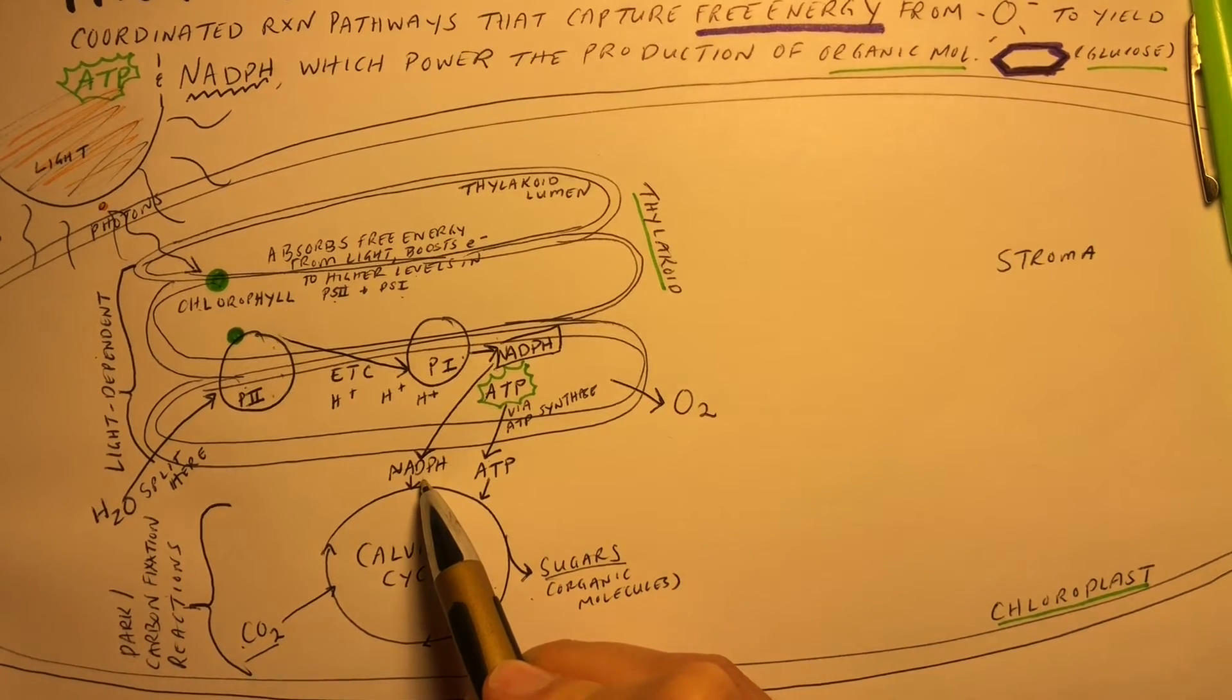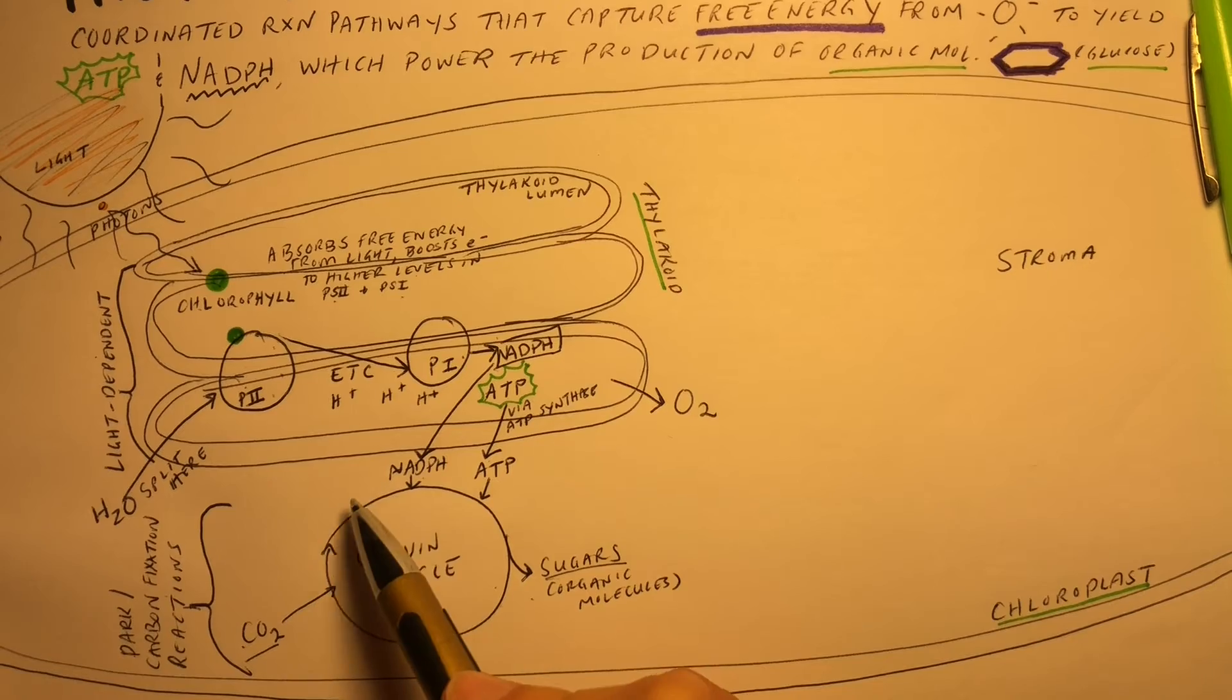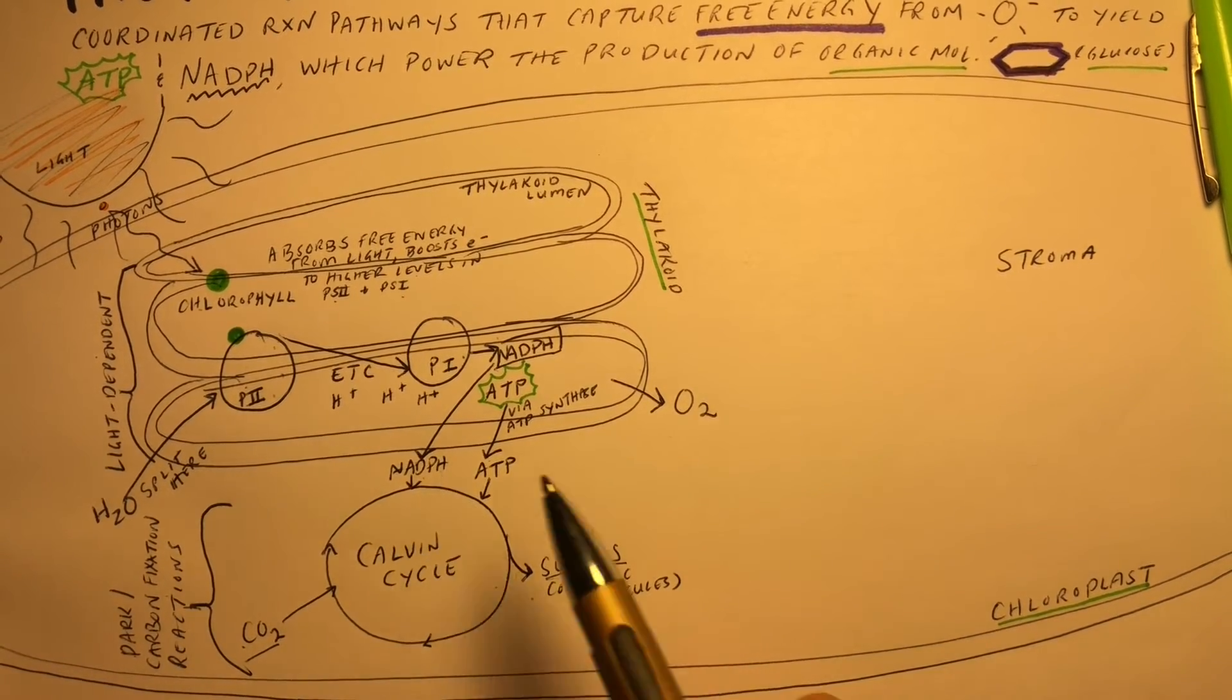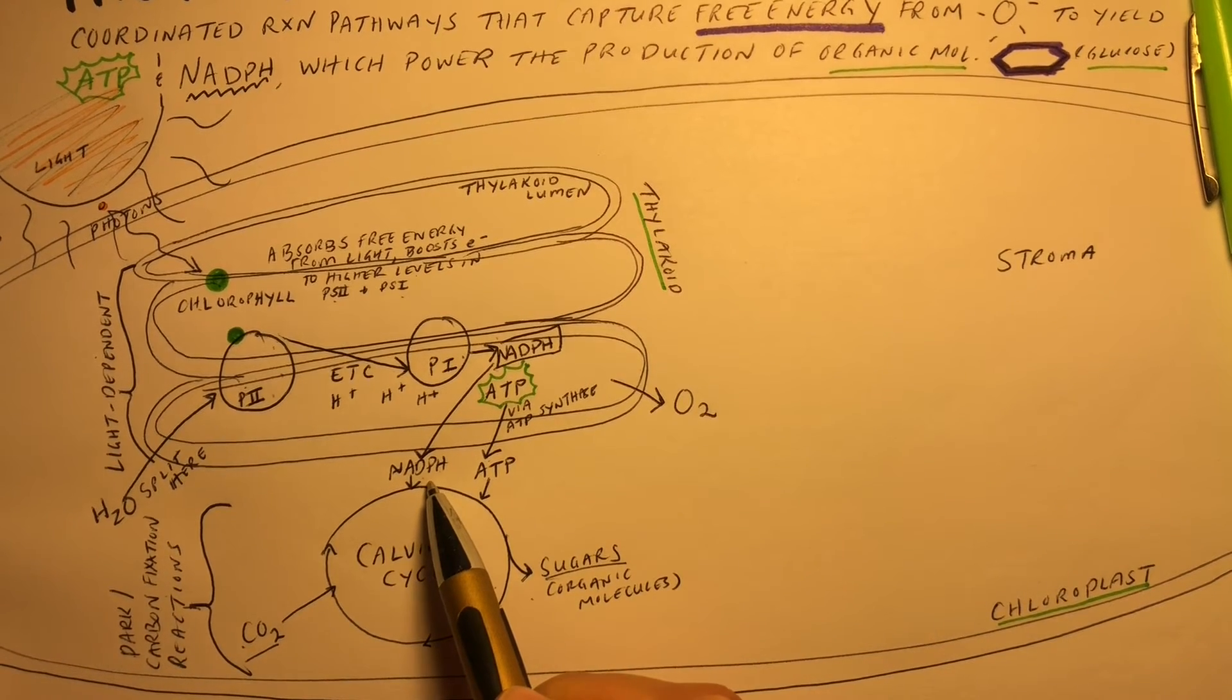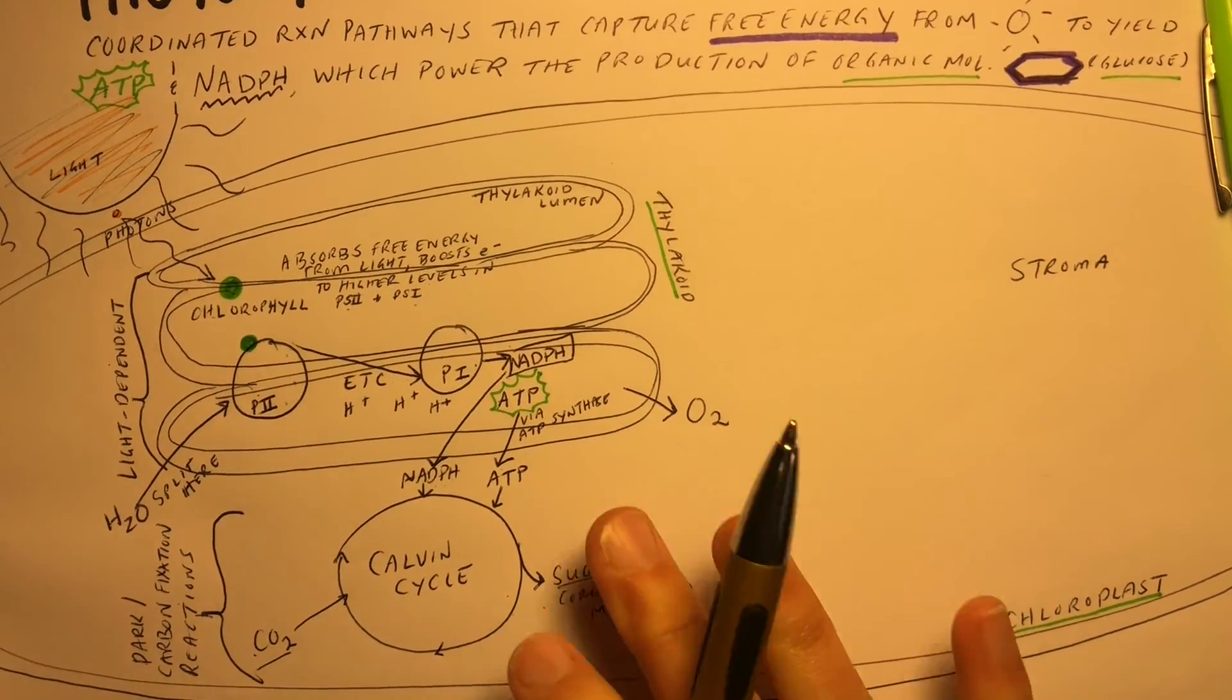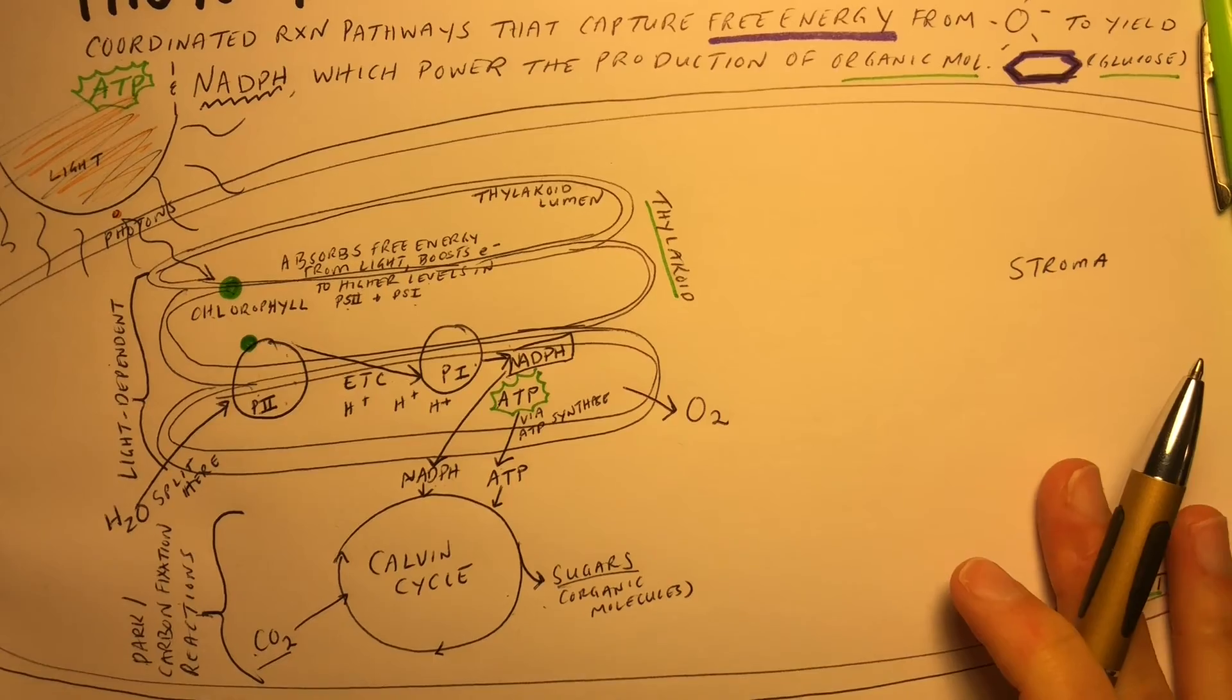If you've already studied cellular respiration, you might remember that NADH is a coenzyme produced in that process. It looks very similar to NADPH. An easy way to remember which one is produced in which process is that NADPH has a P, just like photosynthesis has a P. NADH is the one that is used in cellular respiration.